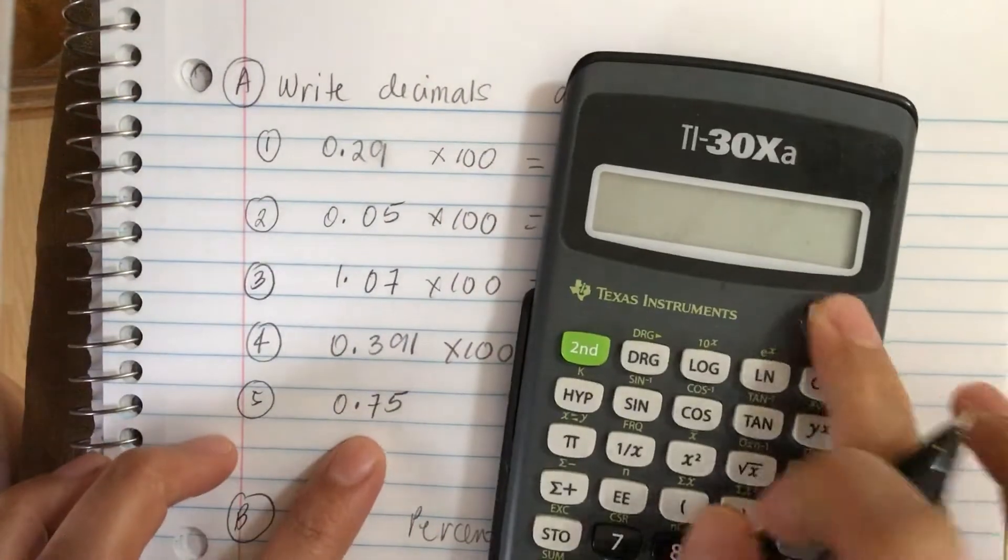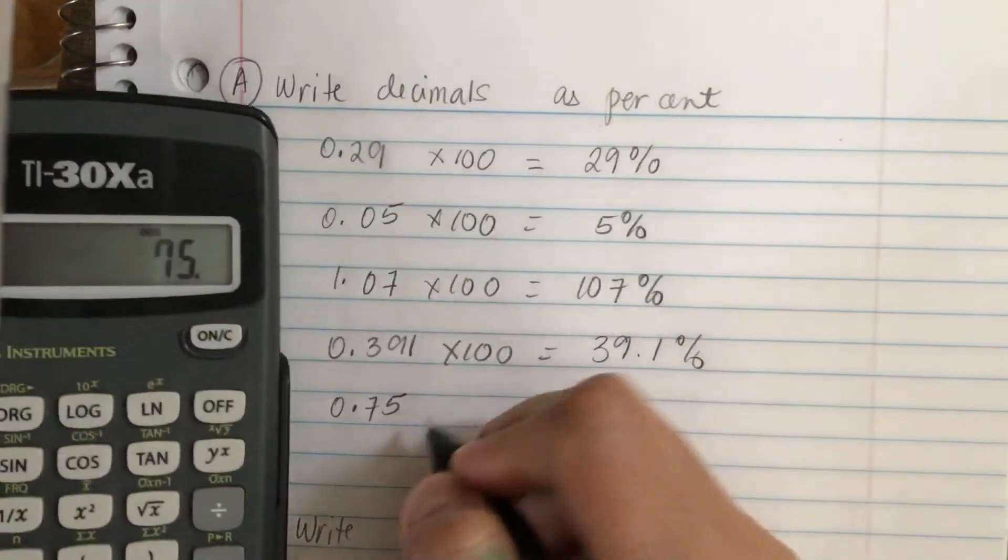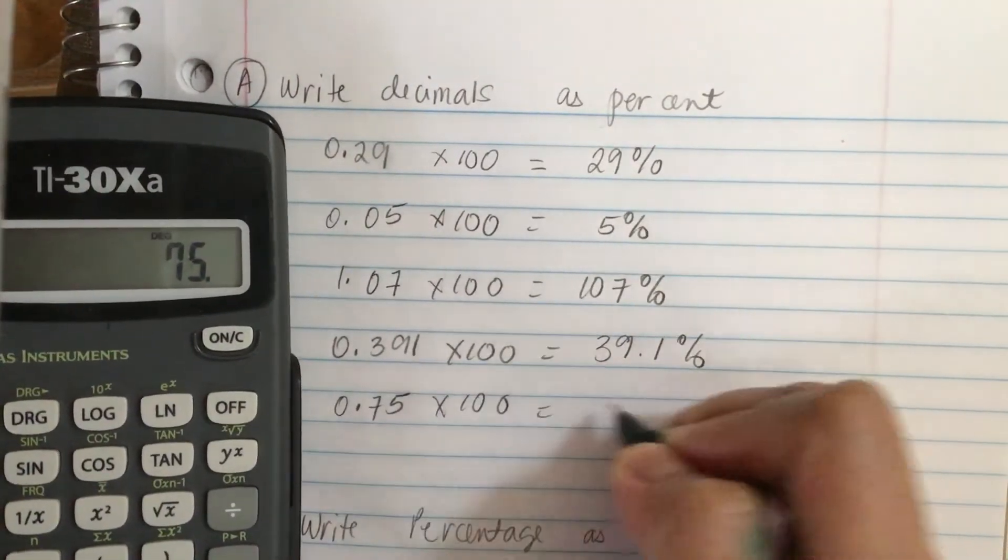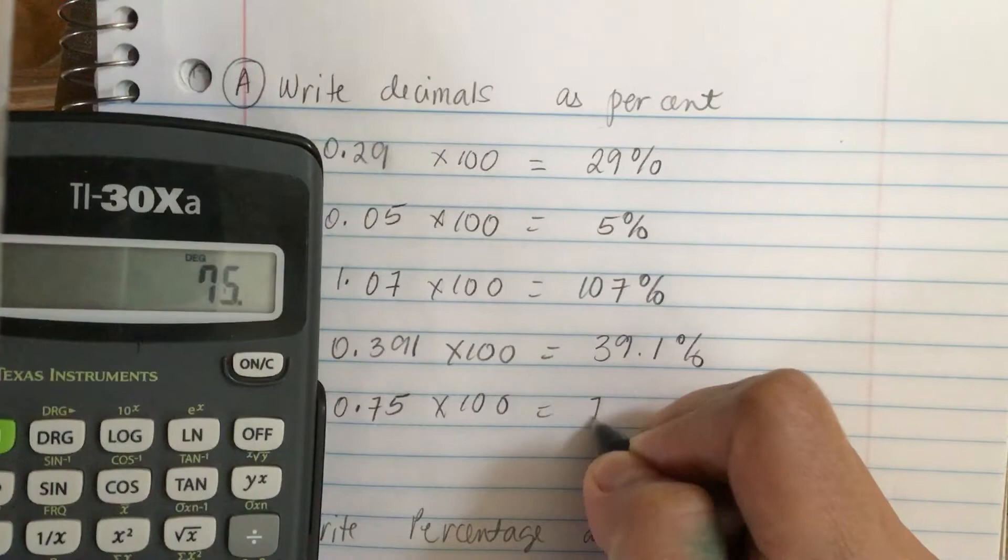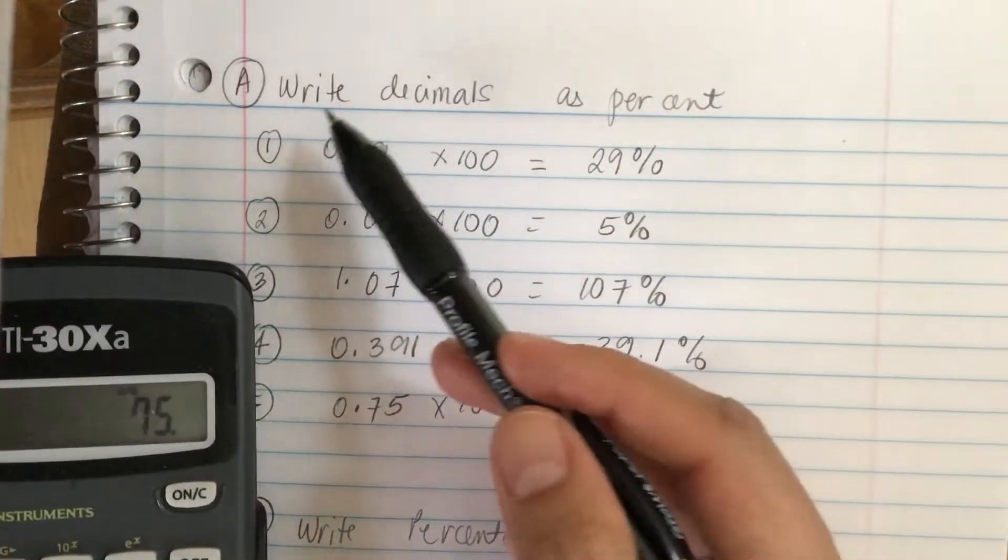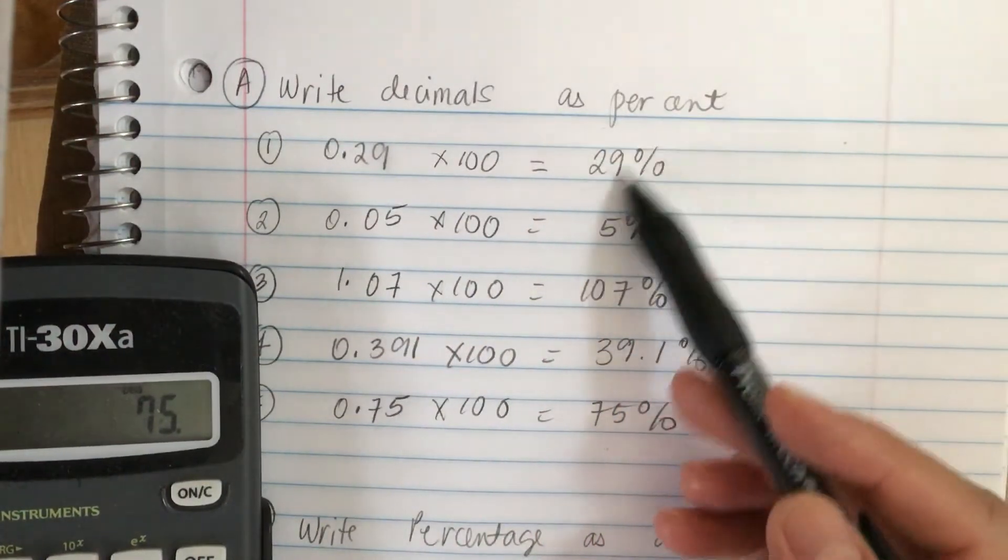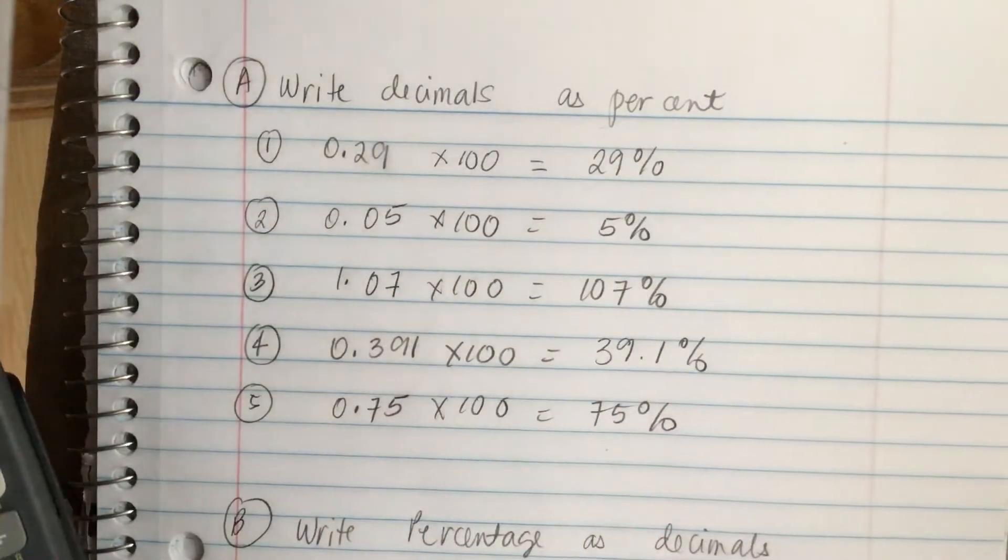So 0.75 times 100, we get 75 percent. So this is how you write decimals to percent or convert to percent.